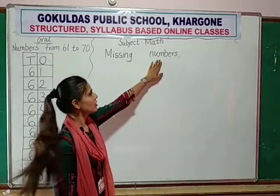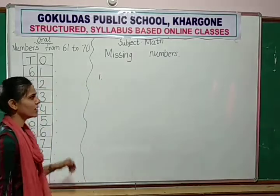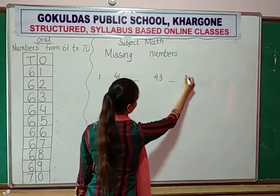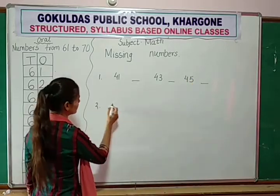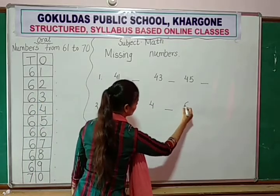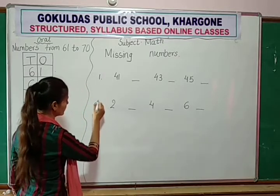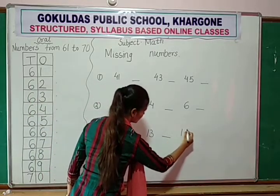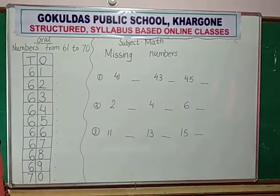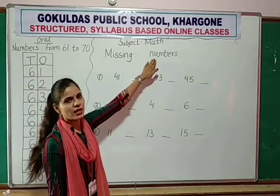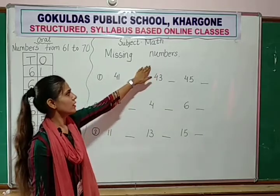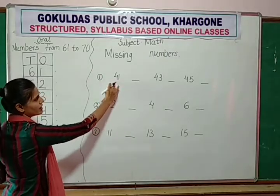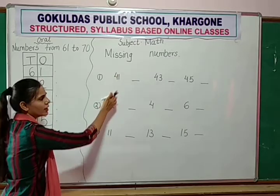Then write missing numbers. Look over here. First you write down the heading: missing numbers. Then write down number 1. Example number 1: first identify the number. Which number is this? The number is 41.